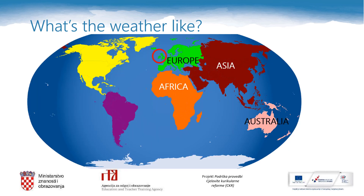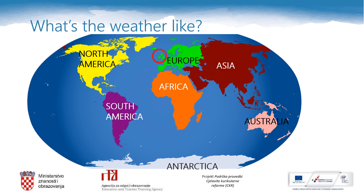What's the name of the yellow continent? North America. The violet one is South America. And the white one is Antarctica.